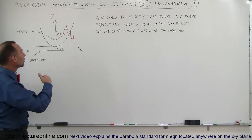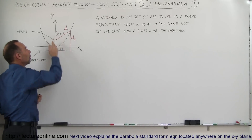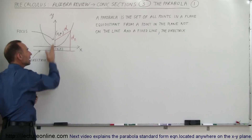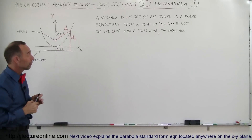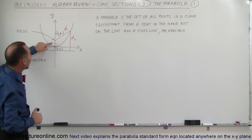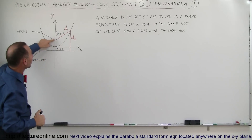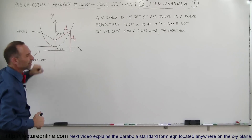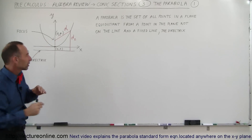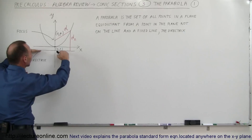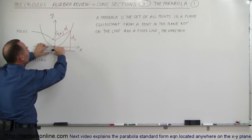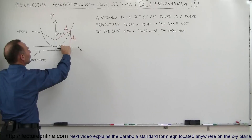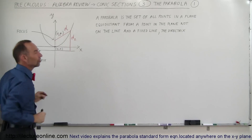On the other side we have a fixed point on the axis that goes right to the vertex, and that point is a distance p above the origin so that the distance from there to there is equal to the distance from there to there. Just assume that this distance is the same as this distance.